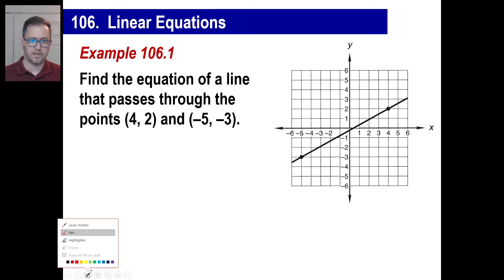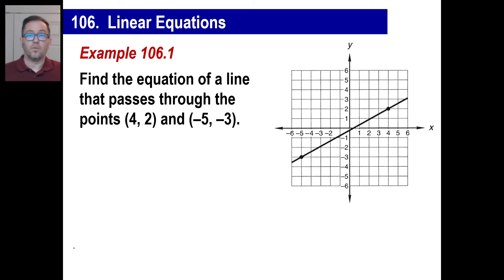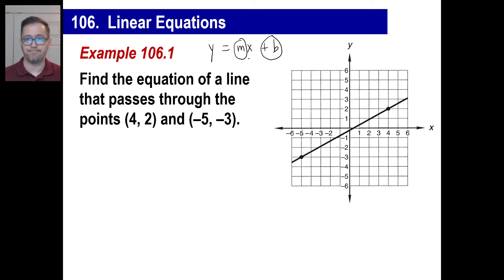Here's the deal. They will say, find the equation of a line that passes through this point and that point. I can tell you a really simple way of solving any of these: the first thing is to absolutely just write y equals slope times x plus the y-intercept. That's what you need to do. All you need to do is figure out what the slope is and figure out what the y-intercept is. You need to find M and you need to find B.